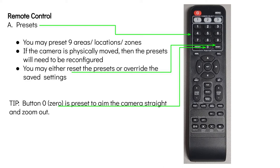If you move your camera — physically pick it up and move it to a different place — you have to reconfigure your presets. You may either reset them or override saved settings. One tip is that button 0 has already been preset. When you press button 0, it will point the camera straight and then zoom it out.